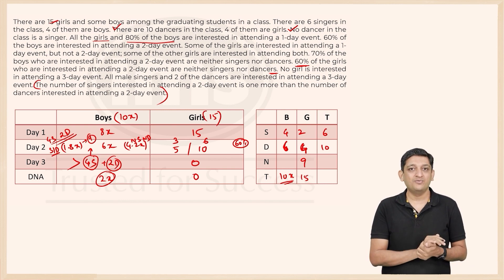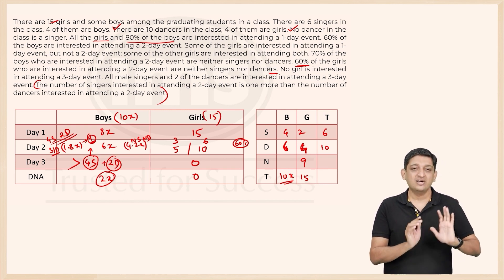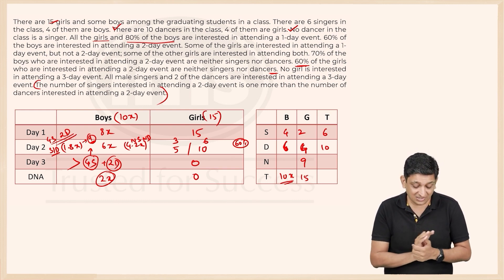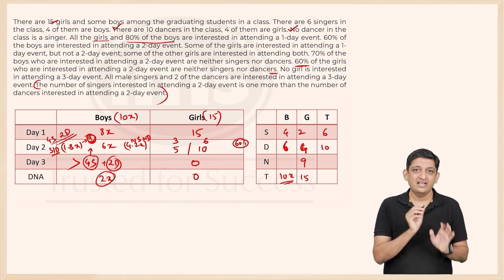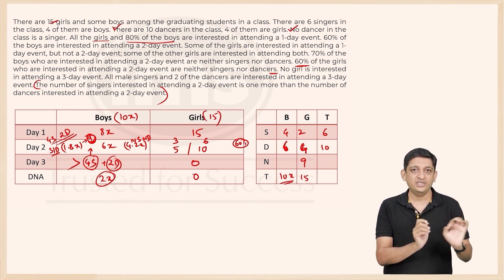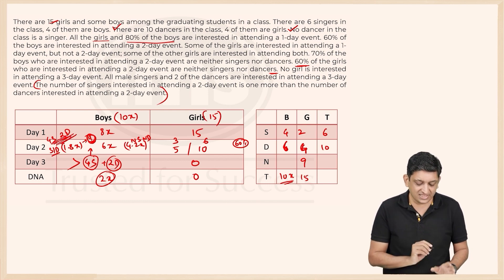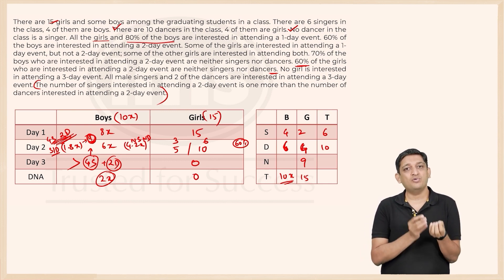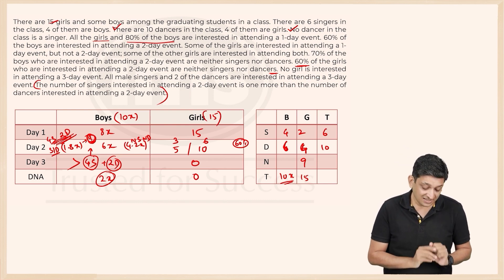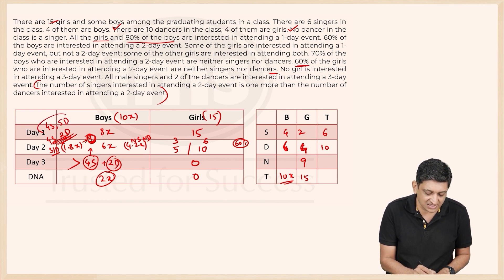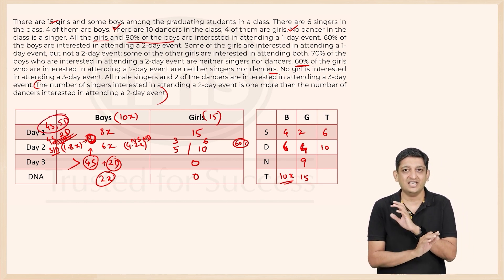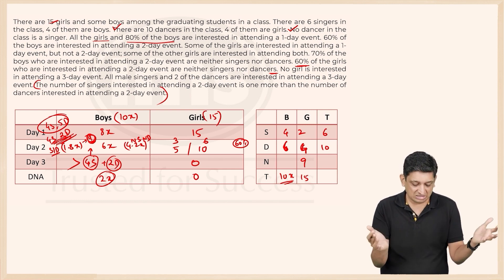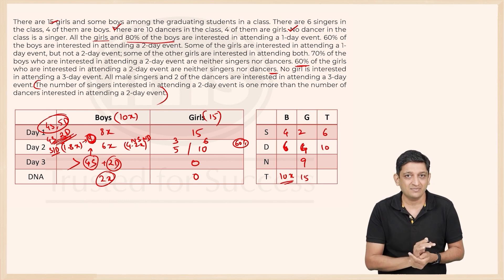With x equal to 5, 9 boys would be good at singing or dancing and interested in the two-day event. We already know 4 singers are among them. So the remaining 5 must be dancers. That gives us 4 singers and 5 dancers from the boys side for the two-day event.